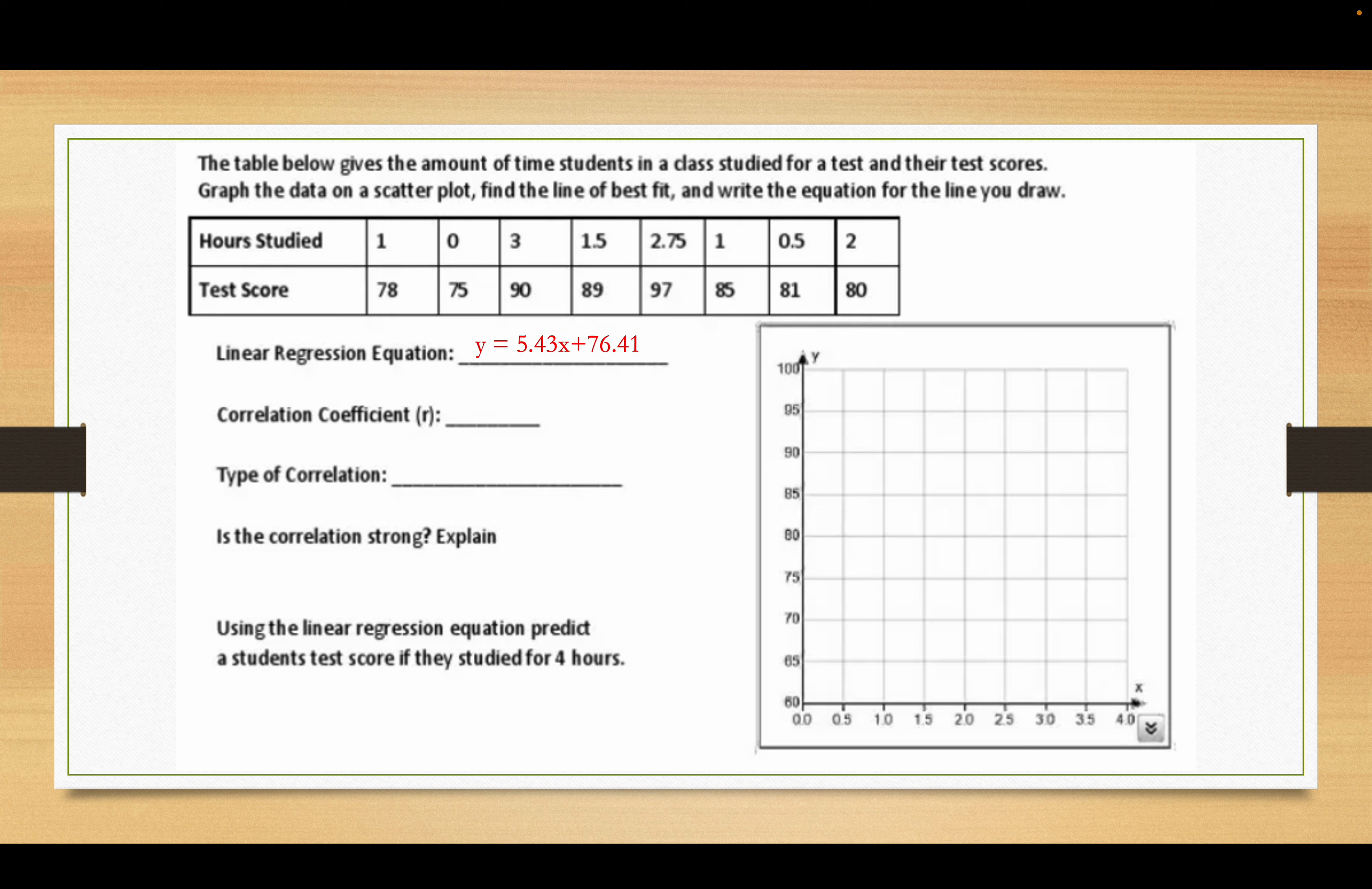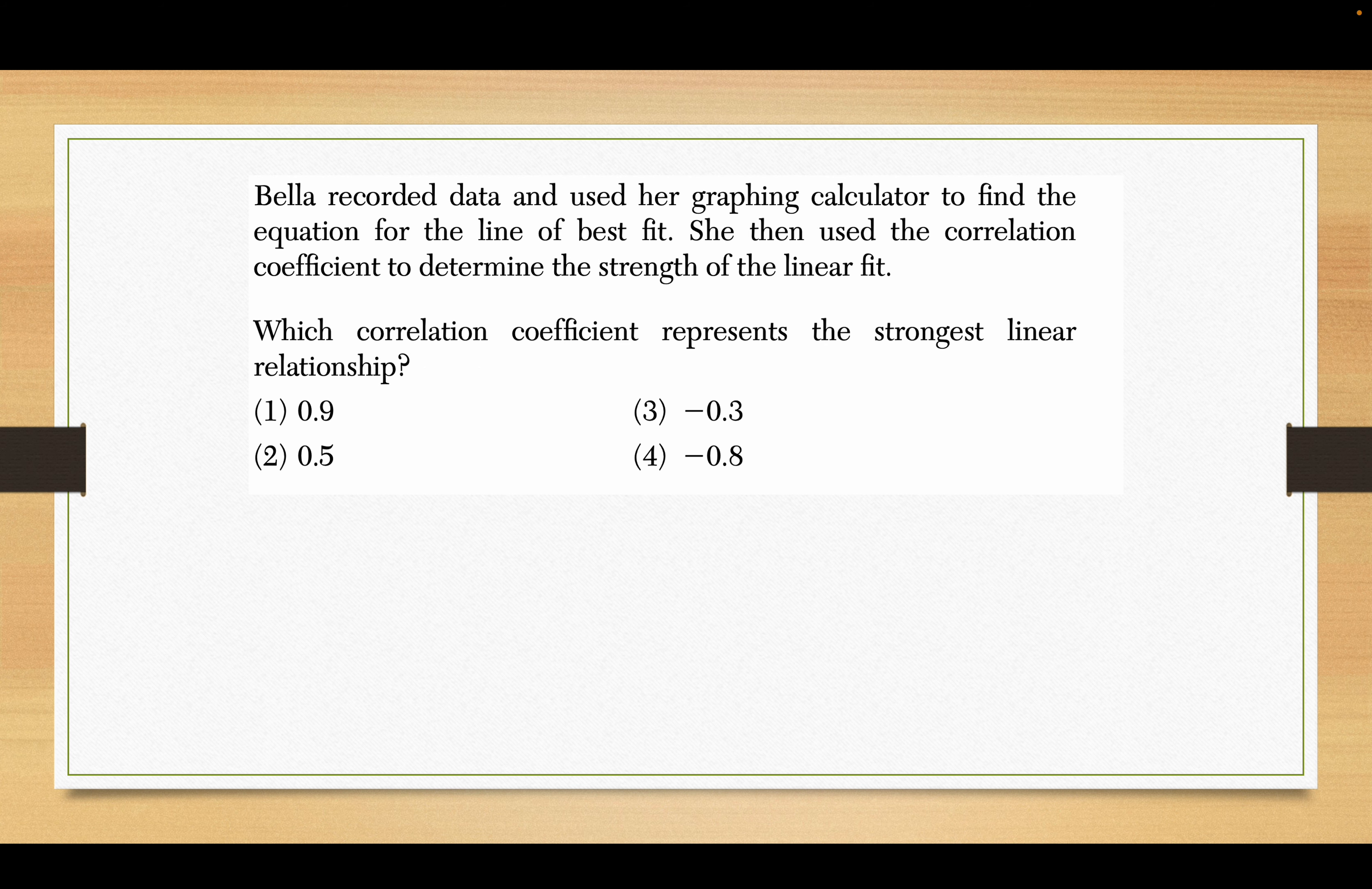So we put it all in, the equation works out to y equals 5.43x plus 76.41. Correlation coefficient, look down a little further, it's r. See they even tell you that there. Gets 0.79. Type of correlation? That's pretty strong and it's positive of course. Is it strong? Yeah, it's getting close to one.